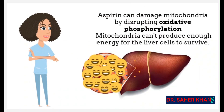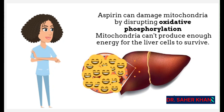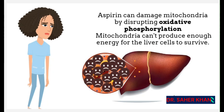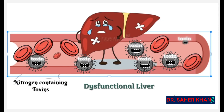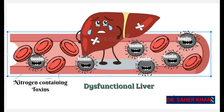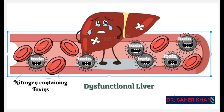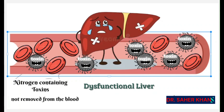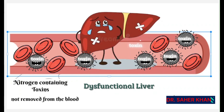Without mitochondrial function, liver cells cannot produce the energy required, which may lead to liver damage and eventually liver failure. Liver damage affects the organ's ability to filter toxins, particularly nitrogen-containing toxins, which leads to the accumulation of ammonia in the bloodstream.